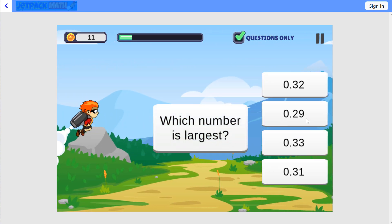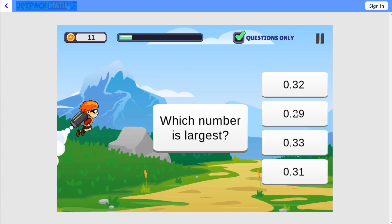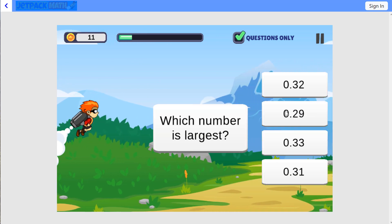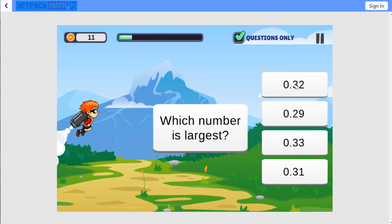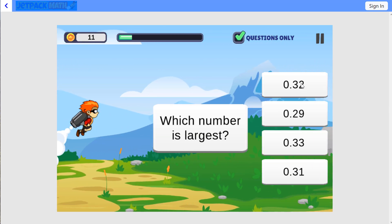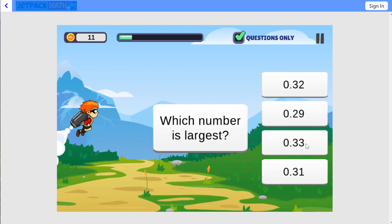Which number is largest? They all begin with zero, so we look at tenths. We have a three, a two, a three, and a three. So we can rule out the .29 because .3 is larger. Then we look at the hundredths. Remember, we're looking for the largest. We have a two, a three, and a one. This number is the largest, 0.33.